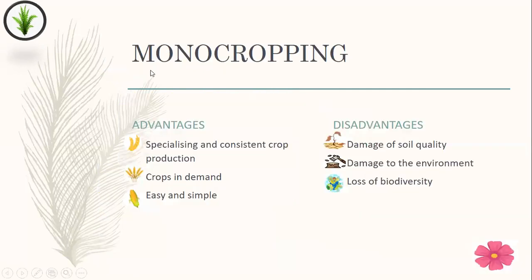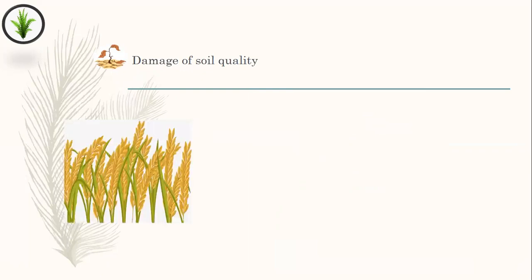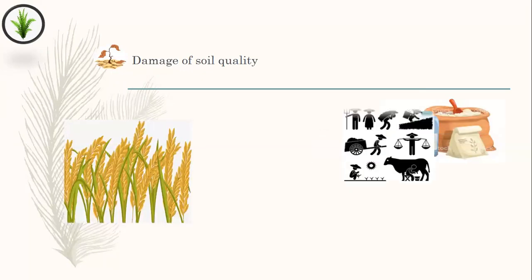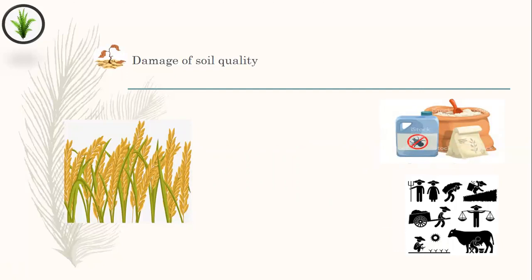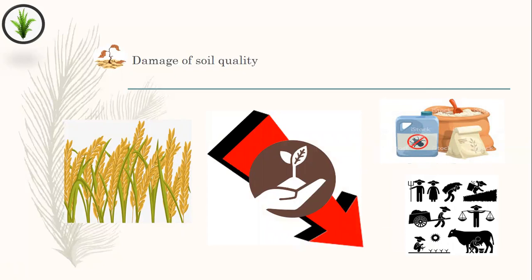Now I'm going to explain the disadvantages. The first disadvantage is damage of soil quality. If a farmer grows only one single crop on the field, it can lead to intensive farming throughout the farm. If the farmer grows this crop every year in such a manner, it can lead to depletion of soil nutrients, so it can reduce the soil quality.